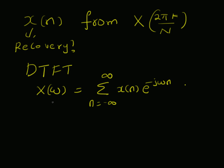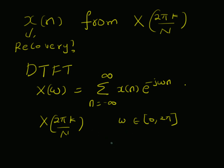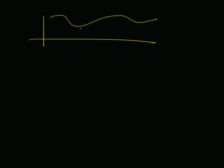Now we can sample this continuous signal in the frequency domain as X(2πk/N). We divide the interval of ω — which belongs to the interval 0 to 2π — into N sub-intervals. That means each sample is separated by a value Δω = 2π/N, i.e., the separation between two consecutive samples is given by 2π/N.